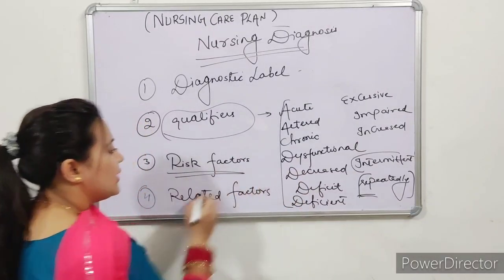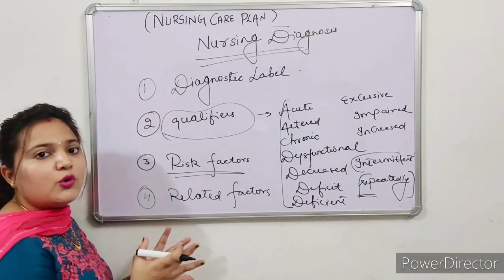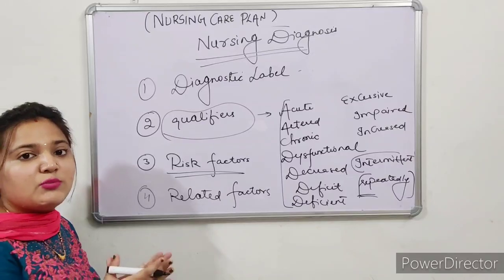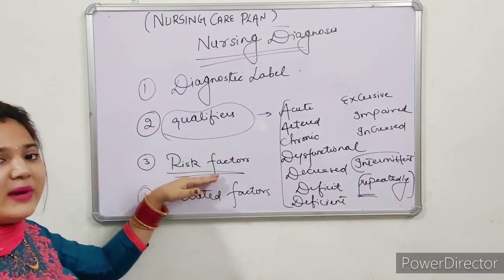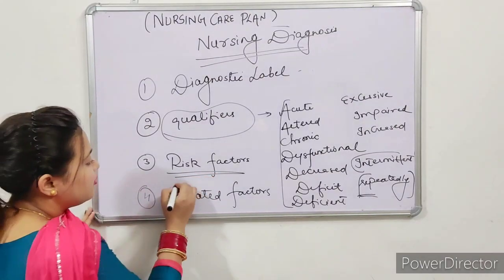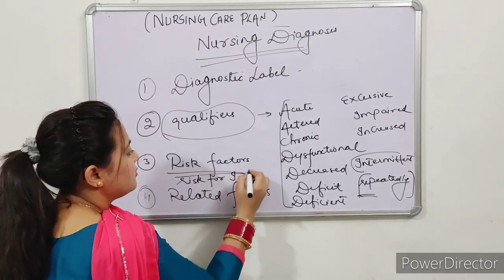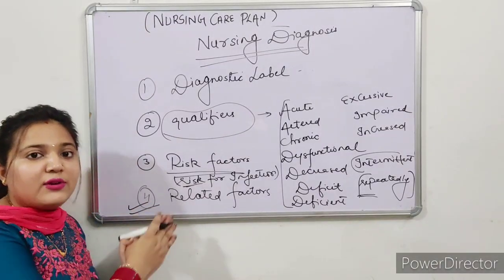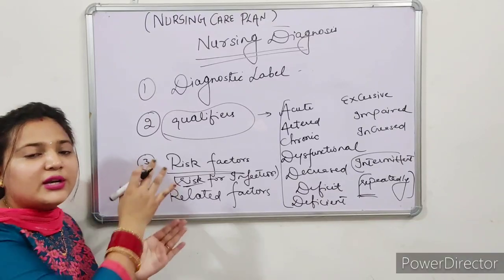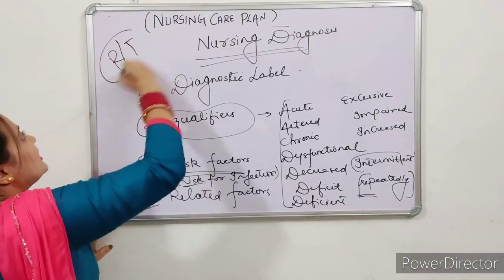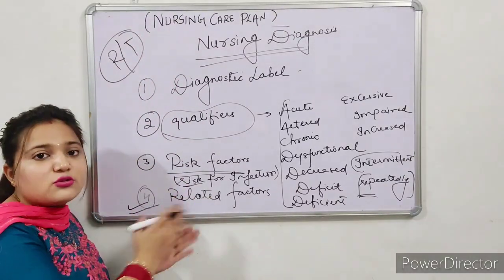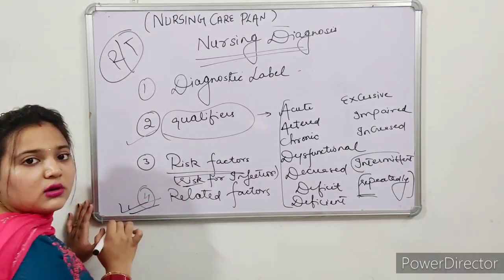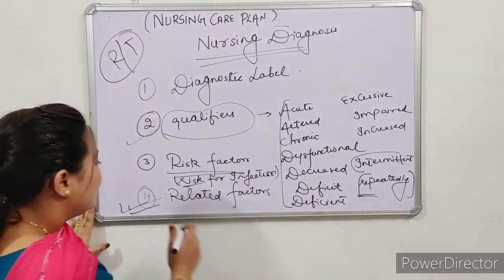Next is Risk Factors. If a patient has a disease — for example bronchoconstriction, fever, or cancer — and you know that the patient's immunity will become low, then we add a risk factor to the nursing diagnosis, such as 'Risk for Infection.' Fourth is Related Factors. In many nursing diagnoses you will see 'Related to' written — those are the related factors we add to the nursing diagnosis. Qualifiers and Related Factors are two components you must always add.